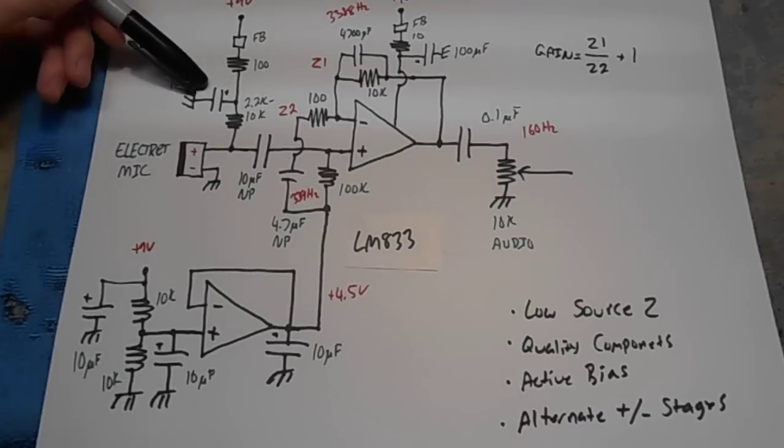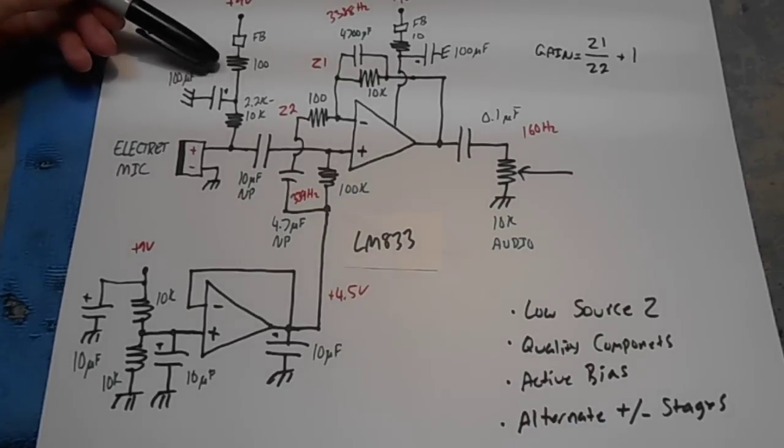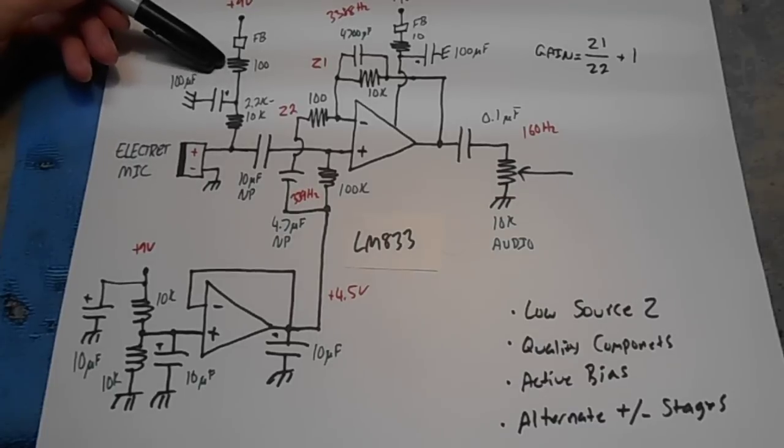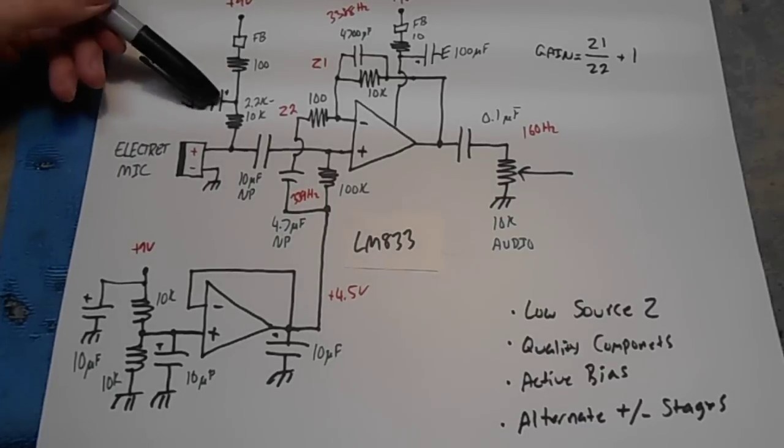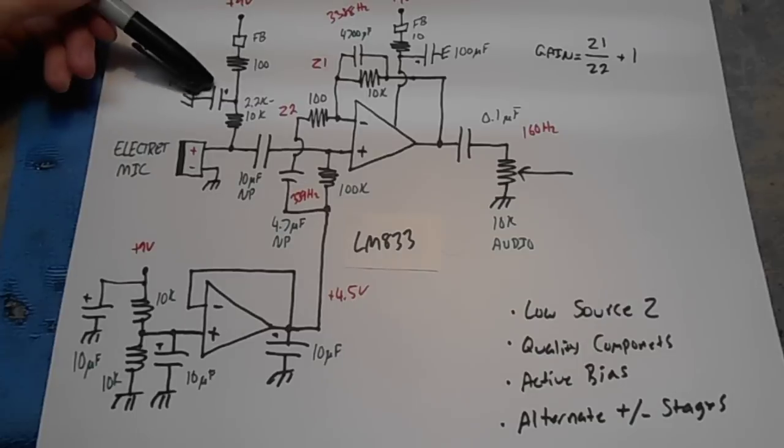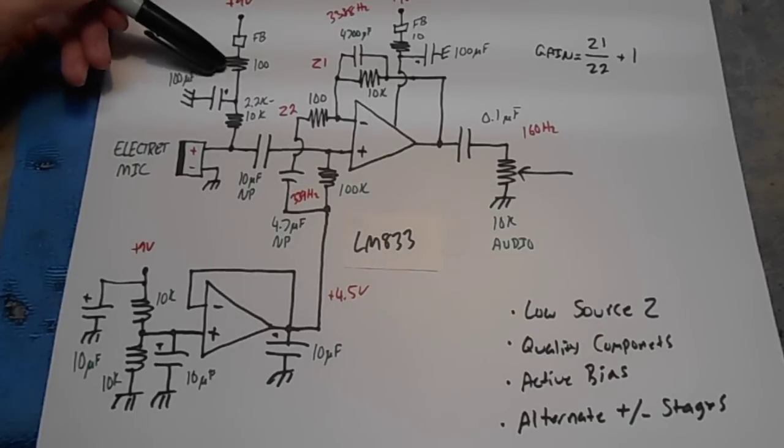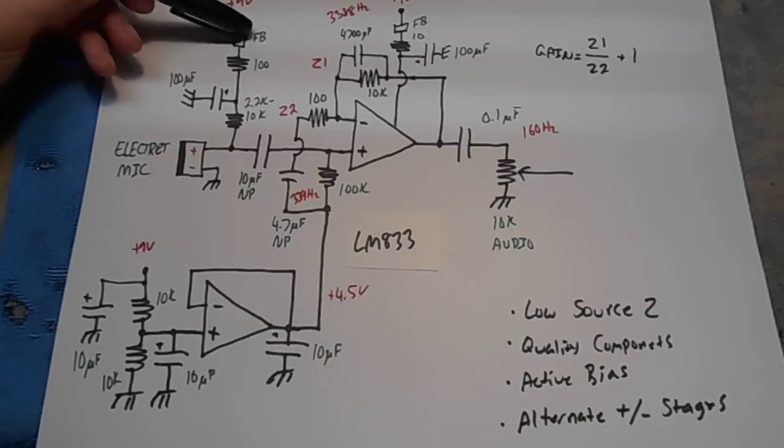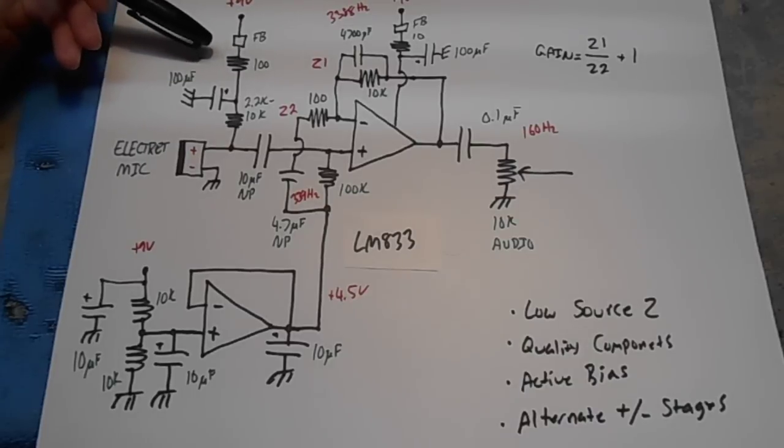So we have a 100 microfarad capacitor here. Then we also want to add a smaller value, about 100 ohms or so in series with that DC bias. That forms an RC low-pass filter just to remove any noise on that DC microphone bias line. We also throw a ferrite bead on there too just to knock down any RF.